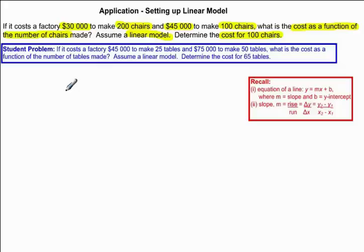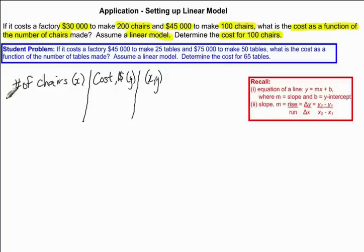I'm going to present the given information in a different form. I'm going to create a table of values. So I'm going to take the number of chairs, and we're going to let this be our x value. So this is our independent variable. Then we have cost in dollars, and this is our y variable. This is our dependent variable. And then we're going to write them as an ordered pair, x and y.